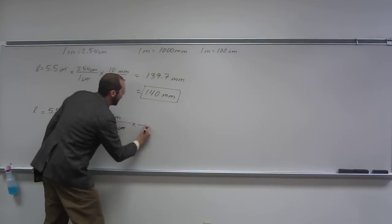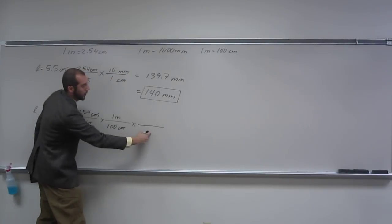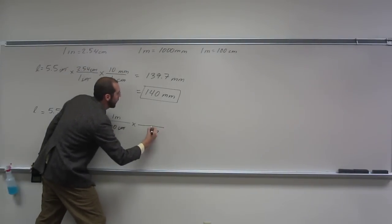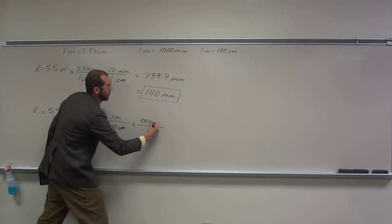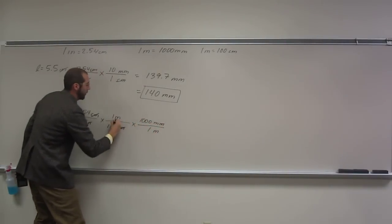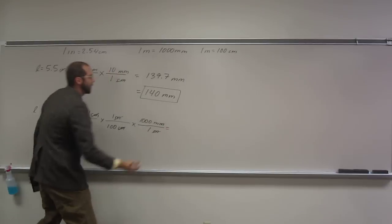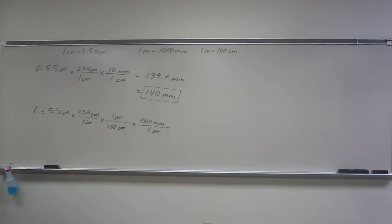So what are we going to multiply this by? What's going to be on the bottom unit-wise? Meters. Yeah. And in this case, 1 meter. On the top? 1,000 millimeters. So meters now canceled. And let's see if we get the same answer. So 5.5 times 2.54 times 1,000 divided by 100.